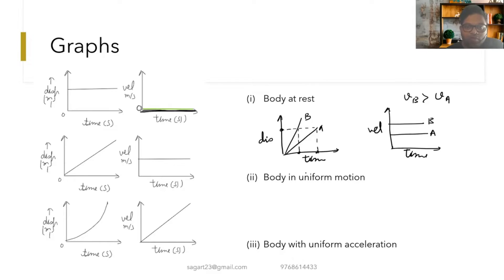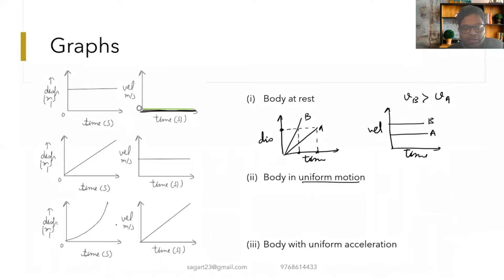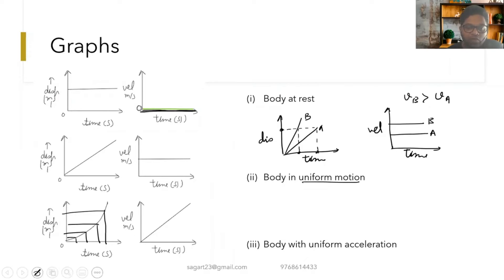For a body with uniform acceleration, the velocity increases with time. As time increases the velocity is increasing, so the distance covered in unit time is not the same — in one time interval the distance covered is less, and in the next time interval the distance covered is more. This indicates a body with uniform acceleration.